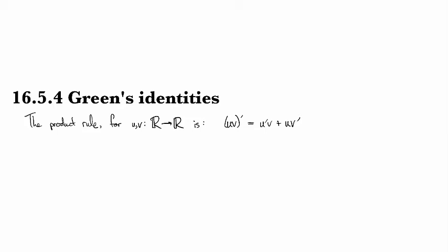So to undertake Green's identities, let's just back up a little bit and review some stuff we know from single variable calculus. So for functions of a single variable, the product rule looks like this. If we take the product of u and v and then take the derivative, we get u prime v plus u v prime.